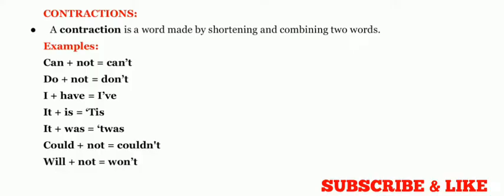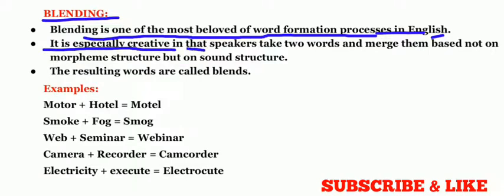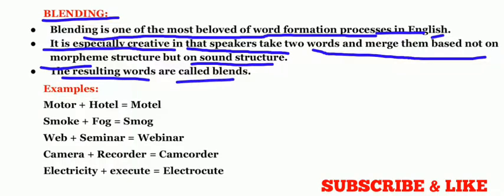Now the next one is blending. So what is blending? Blending is one of the most beloved of word formation processes in English. It is especially creative in that speakers take two words and merge them based not on morpheme structure, but on sound structure. So here the words are made not based on morpheme structure, but based on sound structure, how they sound good. The resulting words are called blends.